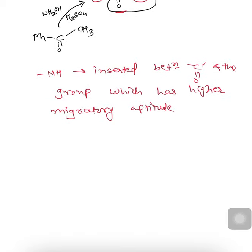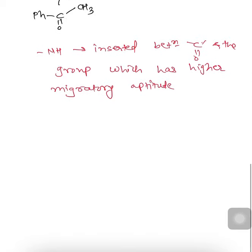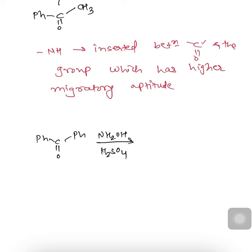For example, if we have Ph-C(=O)-Ph and carry out the reaction in presence of NH2OH and H2SO4, we will get a substituted amide. The NH group is inserted between the carbonyl and one of the groups. Here both groups are phenyl, so we can insert NH between either group, giving Ph-C(=O)-NH-Ph.